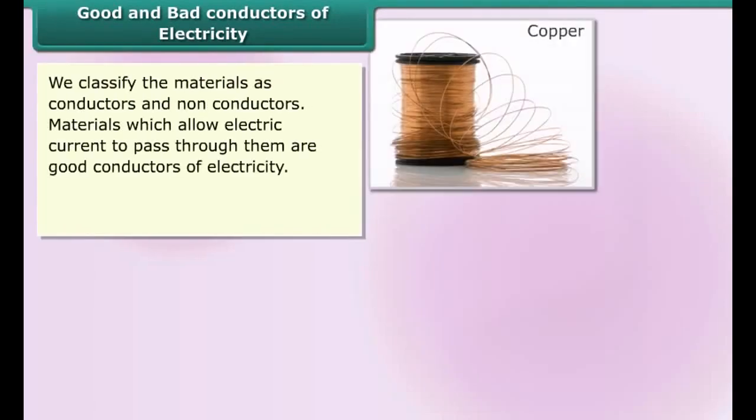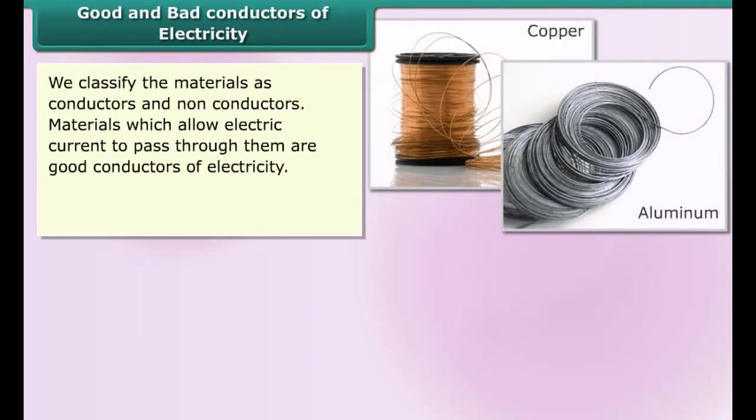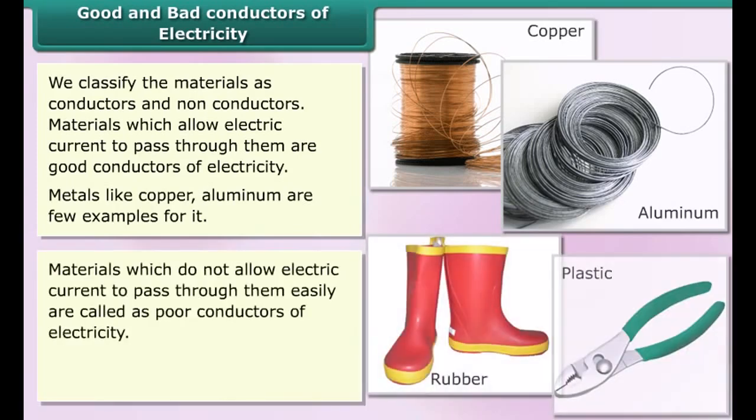We classify the materials as conductors and non-conductors. Materials which allow electric current to pass through them are good conductors of electricity. Metals like copper and aluminum are a few examples of it. Materials which do not allow electric current to pass through them easily are called poor conductors of electricity.